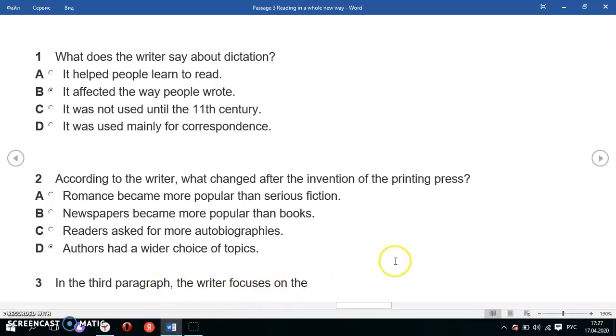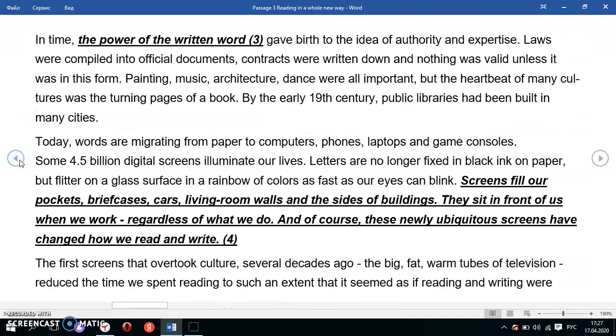Question three: In the third paragraph, the writer focuses on what? Let's look at the third paragraph. In time, the power of the written word gave birth to the idea of authority and expertise. Laws were compiled into official documents, contracts were written down, and nothing was valid unless it was in this form. By the early 19th century, public libraries had been built in many cities. In general, this paragraph is about the importance of publications and words being written on a book and published.